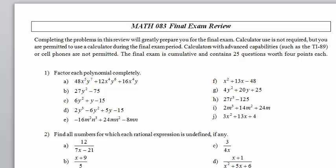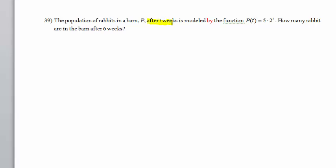Math 083, Final Exam Review, Problem 39. After t weeks, the population of rabbits in a barn is modeled by the function p of t equals 5 times 2 to the t. How many rabbits are in the barn after 6 weeks?